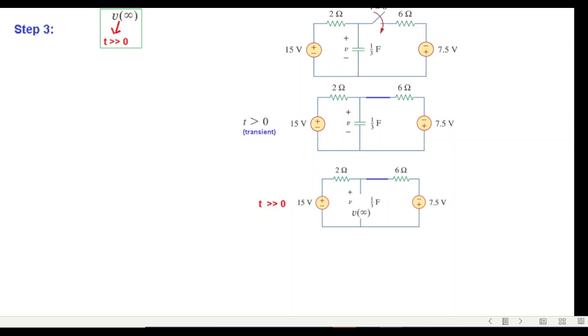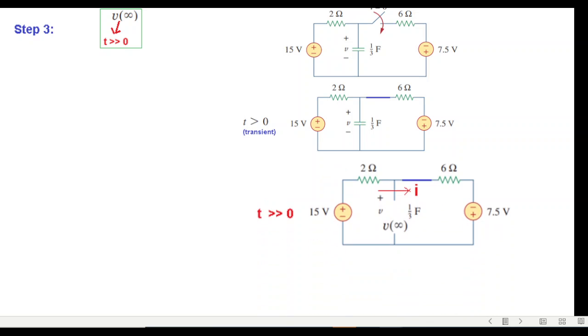How to find this voltage? First we can find the current through this mesh. Let's say this is the current i. By KVL we can find current i. The KVL equation: -15 + 2i + 6i - 7.5 = 0. Solving we get i = 22.5/8.